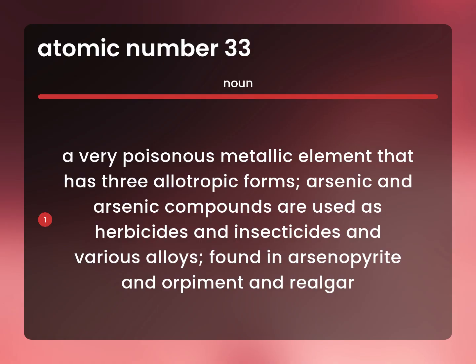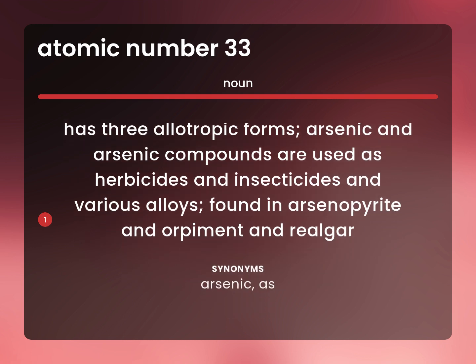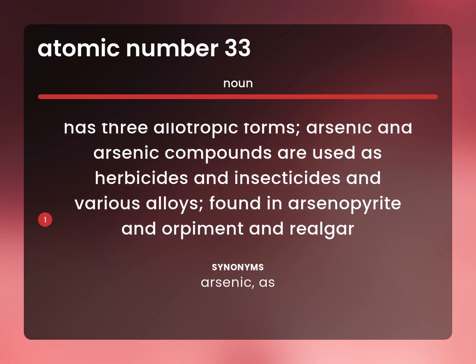Arsenic, As. A very poisonous metallic element that has three allotropic forms. Arsenic and arsenic compounds are used as herbicides and insecticides and various alloys. Found in arsenopyrite and orpiment and realgar.